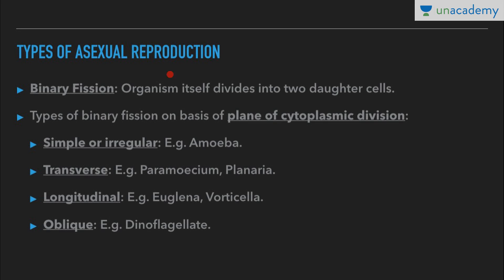Types of asexual reproduction. There are a variety of types: fission, budding, sporulation, fragmentation, vegetative reproduction, and so on. In this lesson we will consider fission.